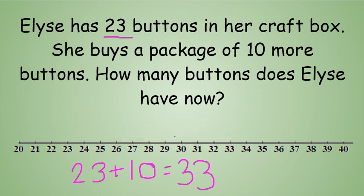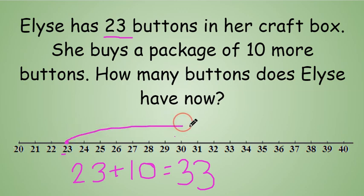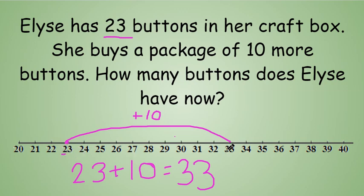But in second grade, we know how to count by 10s. So if I start at 23, which number is going to change — the 10s place or the 1s place when I count by 10s? It's going to be the 10s place. The 10s place will change, so it goes up by 1, taking me to the number 33. I need to write plus 10 above my number to keep track of everything.